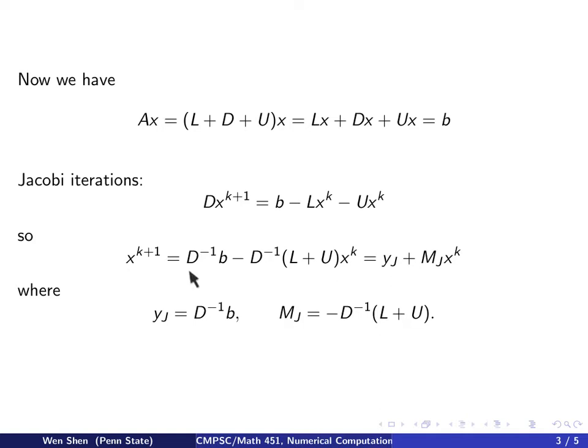We see that D^(-1)b is a vector, and we call this y_J. J stands for Jacobi. And this matrix here, negative D^(-1) multiplied on (L + U) becomes the matrix in front of x^k, and we call it M_J for Jacobi. So we see we managed to write the Jacobi iteration into this standard form.